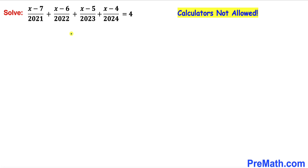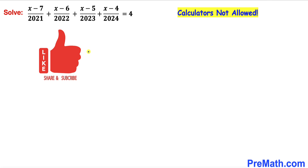Welcome to pre-math. In this video we have got this interesting rational equation: (x minus 7) divided by 2021, plus (x minus 6) divided by 2022, plus (x minus 5) divided by 2023, plus (x minus 4) divided by 2024, equals 4. We are going to solve for x without using calculators of any kind. Please don't forget to give a thumbs up and subscribe.